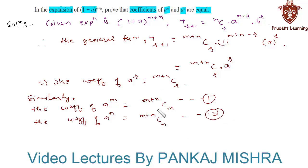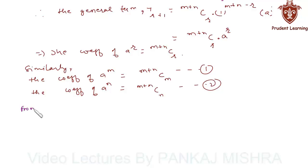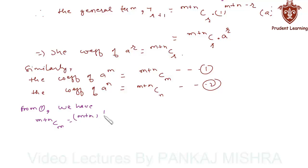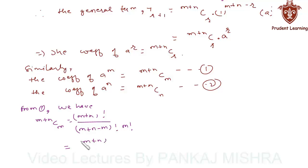Now we have to prove that (1) equals (2). From (1), we have (m+n)Cm, which equals (m+n)! divided by (m+n-m)! · m!, which simplifies to (m+n)! divided by n! · m!.